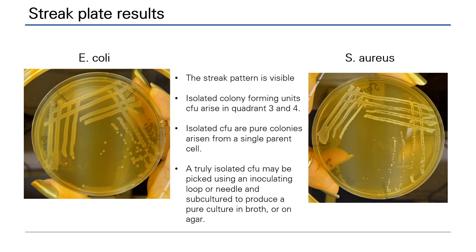Notice that on the right, the staph aureus is still producing isolated colonies, but that the colony morphology is different. The colonies are whiter in color and smaller. Isolated colonies produced in either the third or fourth quadrant are appropriate for subculture.